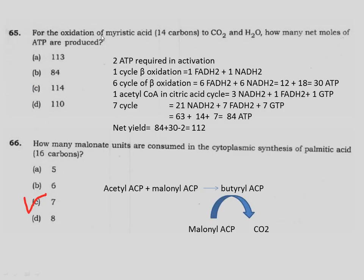Question 65: For the oxidation of myristic acid (14 carbons) to carbon dioxide and water, how many net moles of ATP are produced? Myristic acid undergoes beta-oxidation requiring 2 ATP for activation. Since it is 14 carbons, there are 6 cycles of beta-oxidation, producing 6 FADH2 and 6 NADH. In oxidative phosphorylation, each FADH2 gives 2 ATP and each NADH gives 3 ATP, so 6 FADH2 gives 12 ATP and 6 NADH gives 18 ATP — total 30 ATP from beta-oxidation.